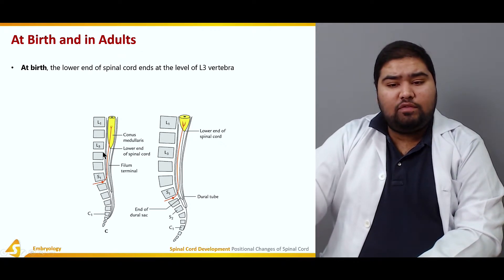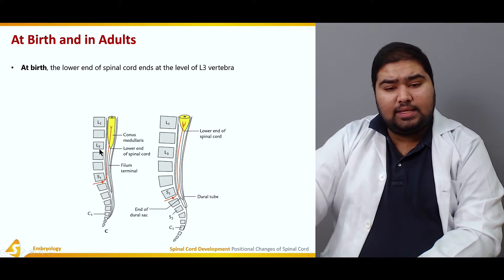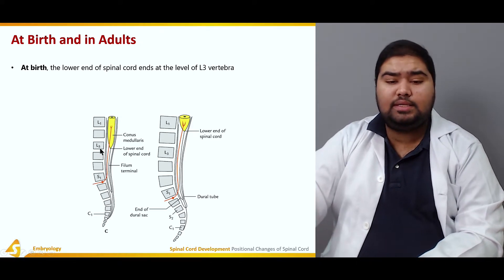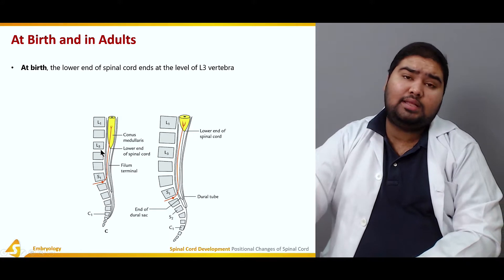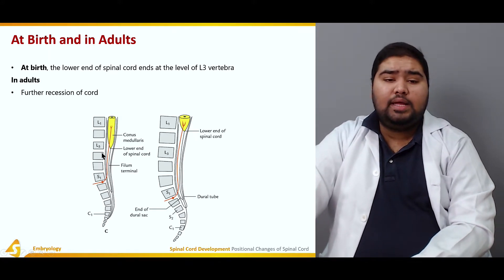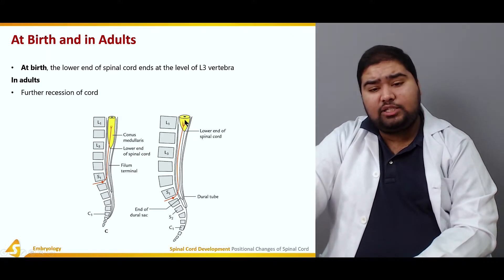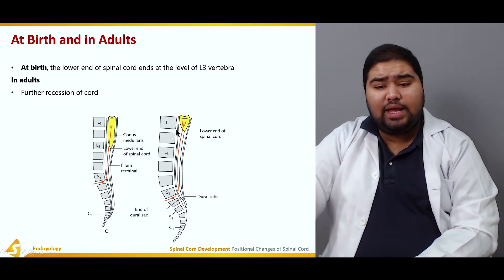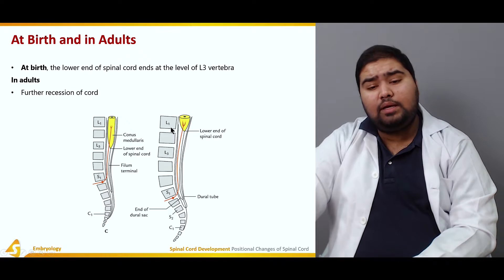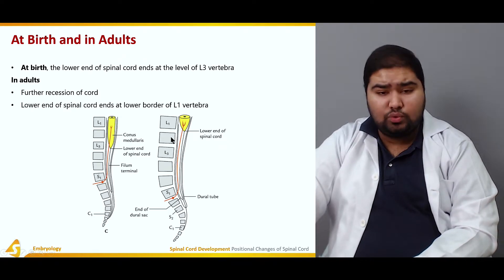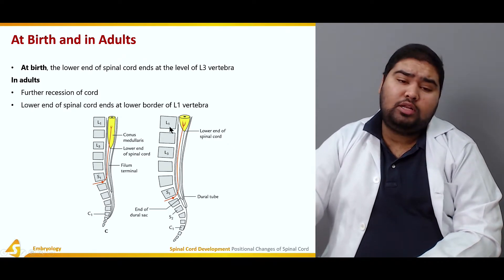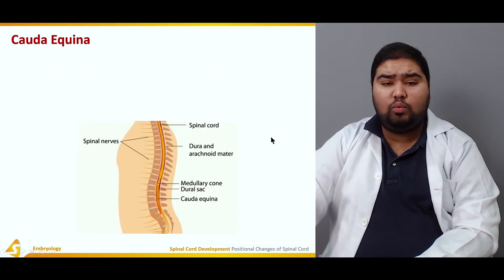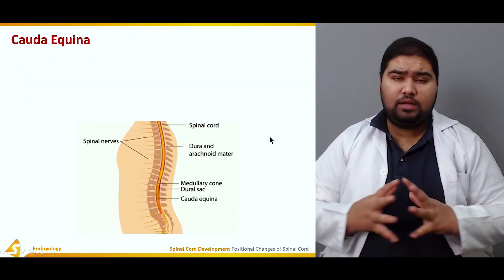At birth, the lower end of the spinal cord is at the lower level of L3 — here you can see the lower end of the spinal cord aligning with the lower end of L3. In adults, there is further recession; the cord comes to lie between L1 and L2, or at the lower border of L1.